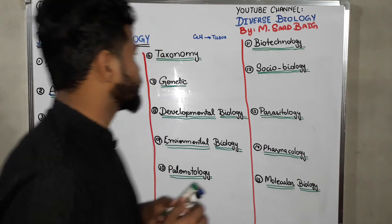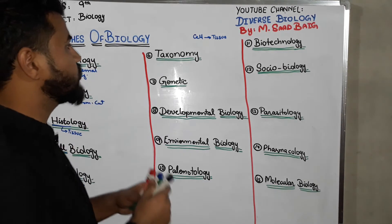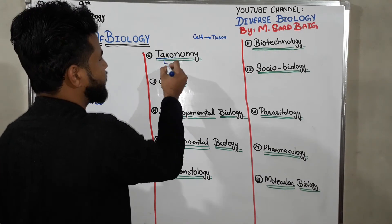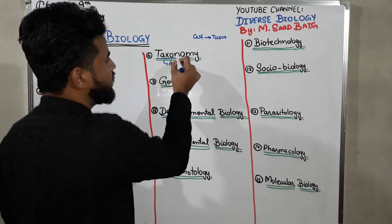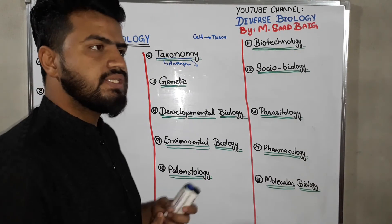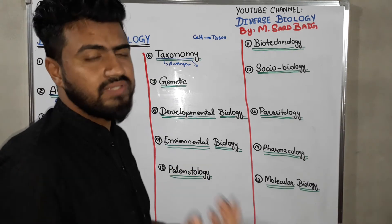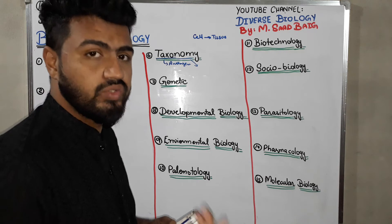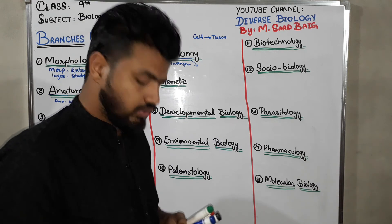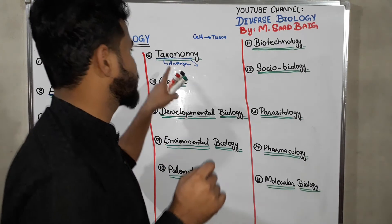Branch number 6 is taxonomy. 'Taxon' means arrangement, and 'nomos' means law. In this branch we study the arrangement of living organisms — we classify them and give them biological names, that is, scientific names. So the study about the arrangement and the giving of names according to the laws of science is known as taxonomy.